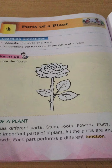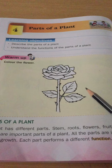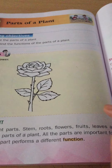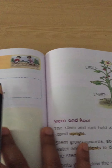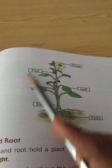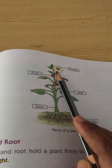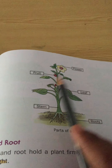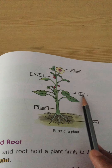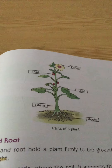So what are the different parts? There will be stem, roots, flowers, fruits, leaves and seeds. These are the different parts of the plant. Now let me figure it out. This is a plant. This is flower. These are fruits. This is leaf. This is stem and this is root.